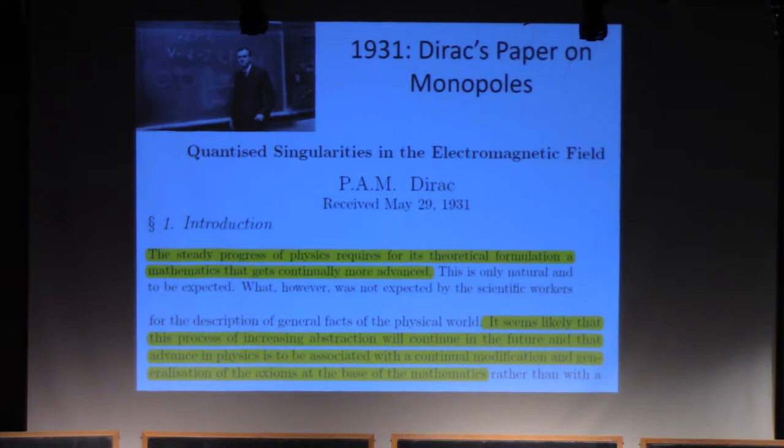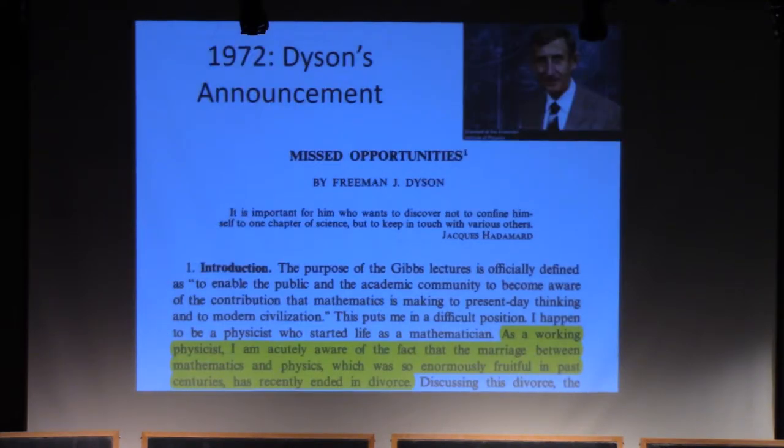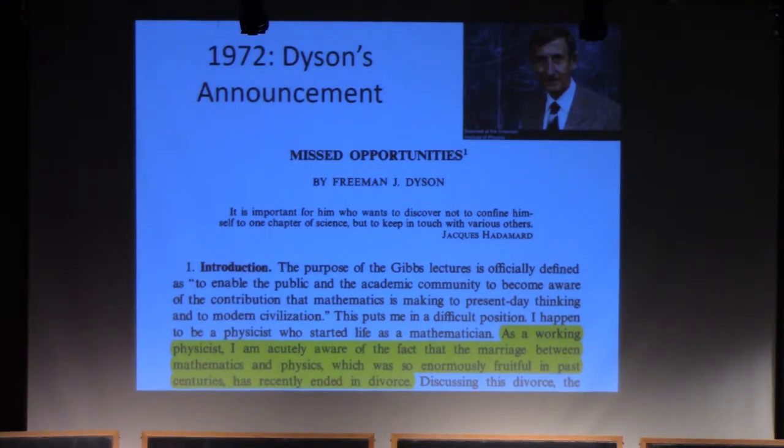Then something happened. A lot of things happened. There were major political, violent political, geopolitical events, and there was nuclear physics with its cascade of amazing experimental results. Over the next few decades, the physicists and the mathematicians drifted apart from each other, so much so that in 1972, Freeman Dyson gave a famous talk in which he proclaimed that as a working physicist, I am acutely aware of the fact that the marriage between mathematics and physics, which was so enormously fruitful in past centuries, has recently ended in divorce.